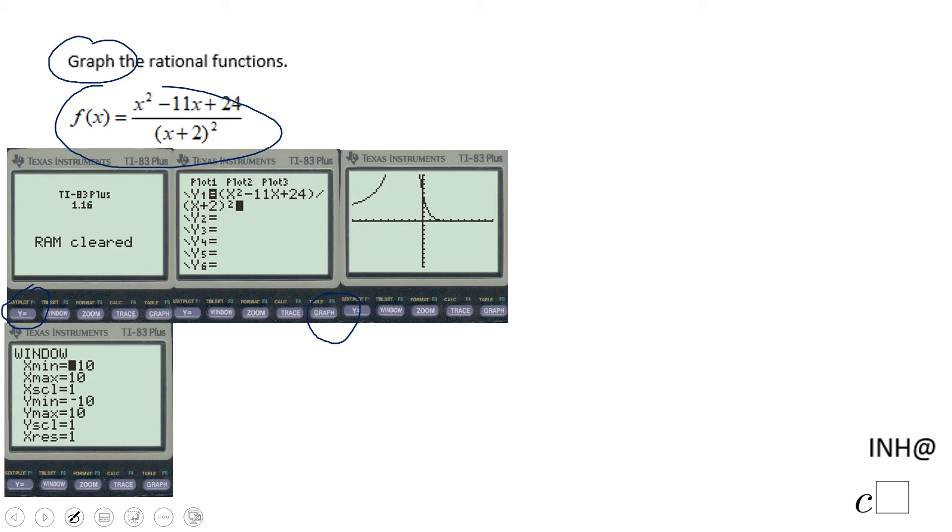For the Y axis, the same way: Y min is negative 10, Y max is 10. But also, you can adjust the window, which I'm going to do. You see the button here.